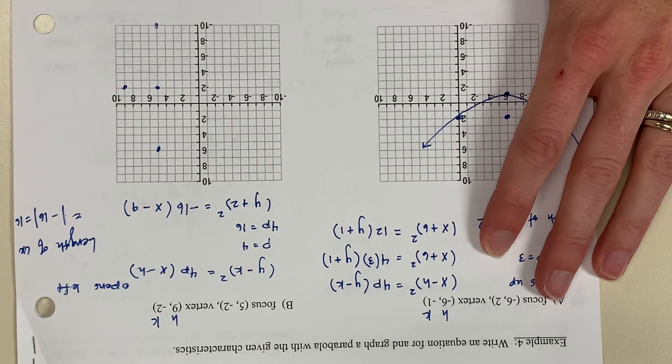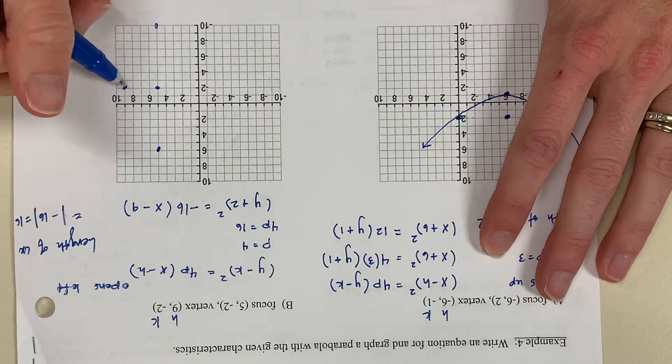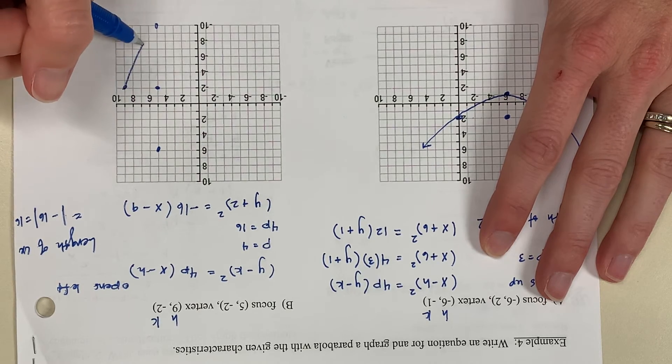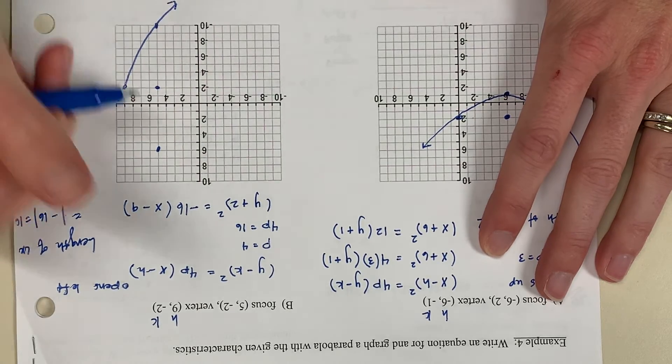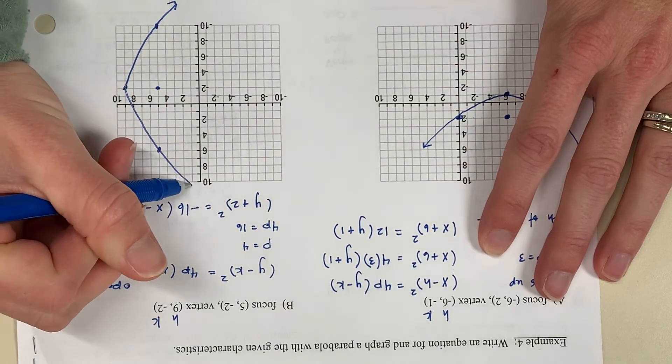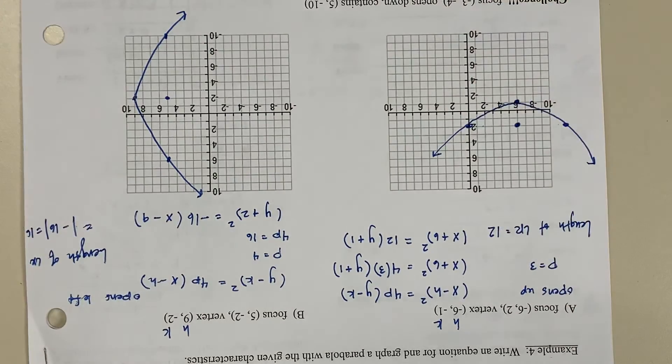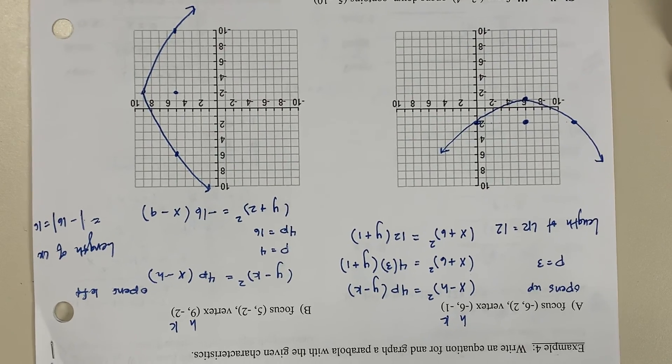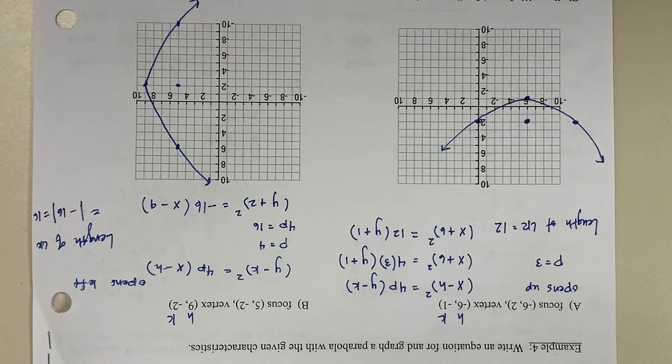So that from one endpoint of the LR to the other, that has a length of 16 units. And then I connect the vertex with the endpoints of the LR. And we have a graph of the parabola.